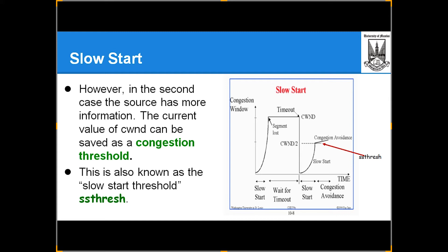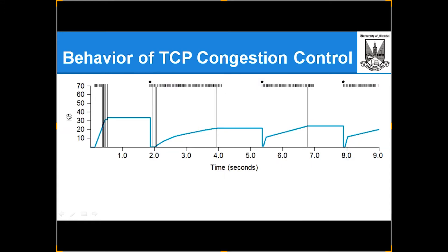Be very careful because exam questions get twisted on this. If you are not clear on the concepts, it will create issues. This is the behavior of TCP congestion control: it went up, timeout happened, came down, and again slowly the congestion window is increasing — almost like a sawtooth pattern.